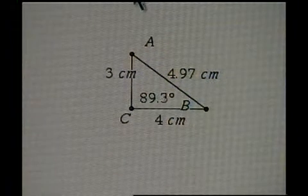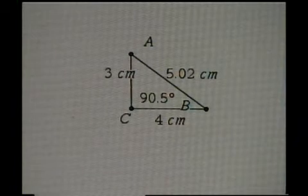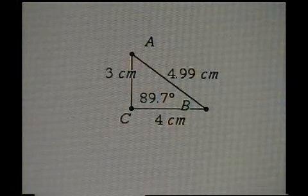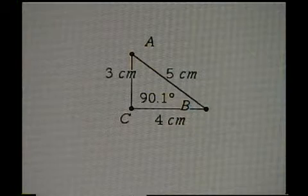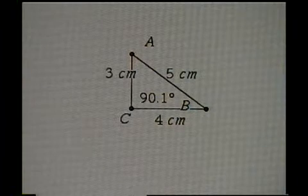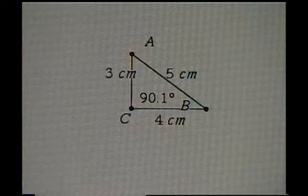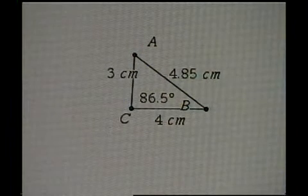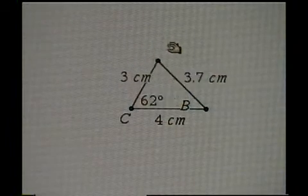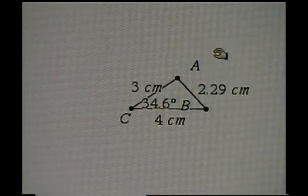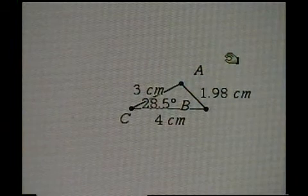Let's see if we can return to a right triangle situation. It's close enough — 5 for the hypotenuse and 90 degrees for angle C.